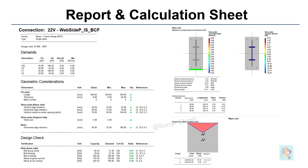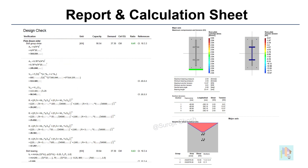For each joint, RAM connection generates a detailed report with a summary of utilization ratio for each design check, and graphic representations or contour plots such as base plate anchor tension. We can also switch on the formulas, which include all intermediate calculations with equations and reference numbers. We can use this to validate or compare results with our hand calculations.